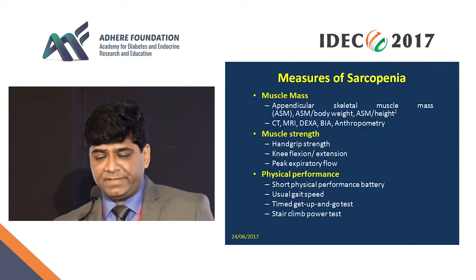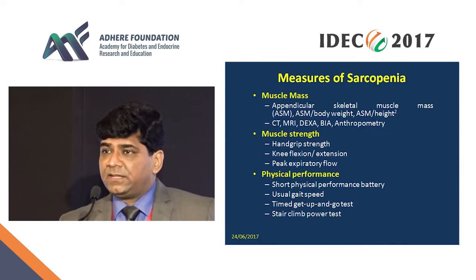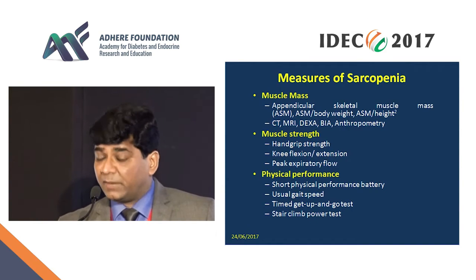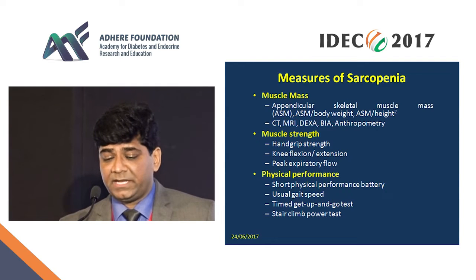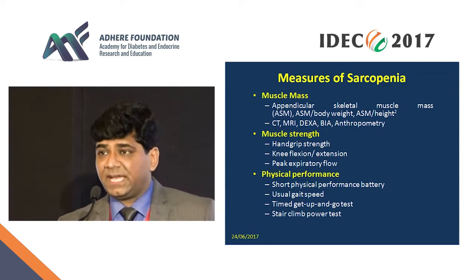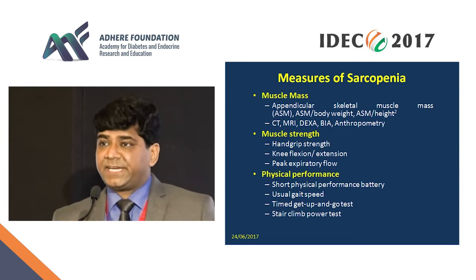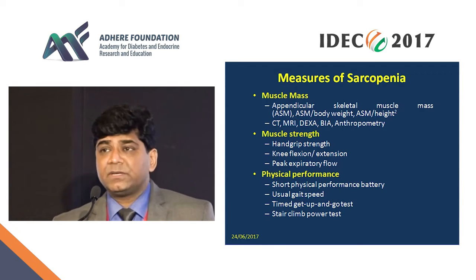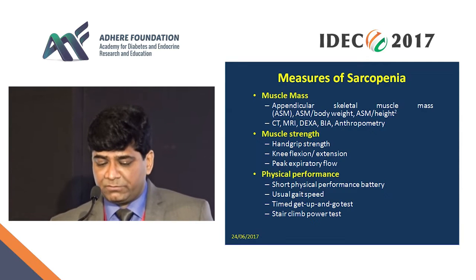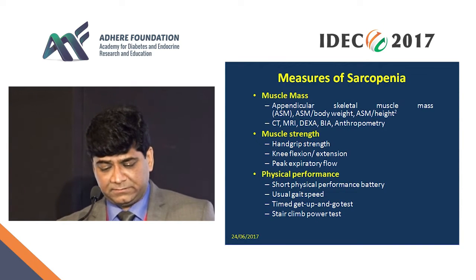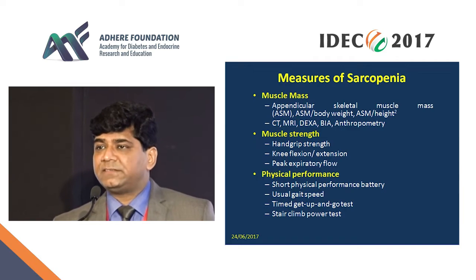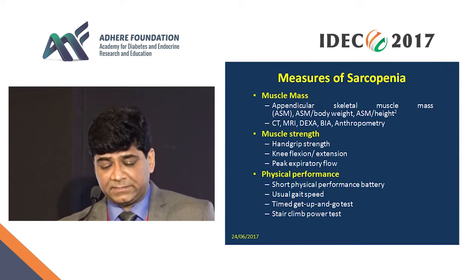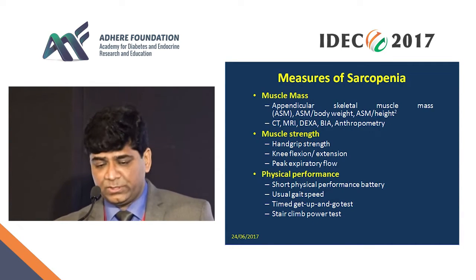There are several ways to measure sarcopenia. Three main important factors are muscle mass, which can be measured by appendicular skeletal muscle mass using CT, MRI, DEXA, or bioimpedance — DEXA scan being the most commonly used modality. Muscle strength is measured by hand grip strength or the strength of knee flexion-extension, and some also use peak expiratory flow. Physical performance measures include the short physical performance battery, the six-minute walk distance, the timed get-up-and-go test, and the stair climb test.